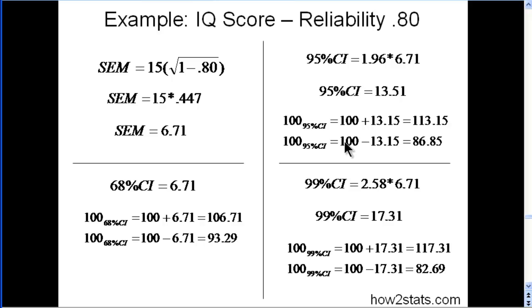And with 95% confidence, it's still a pretty big gap. So someone scores 100 and you can say with 95% confidence that their true IQ score is somewhere between 86 and 113. Still a pretty big gap.